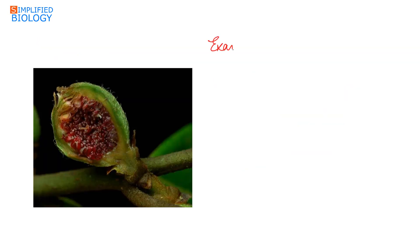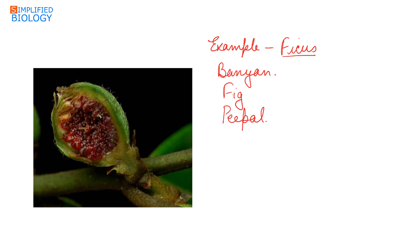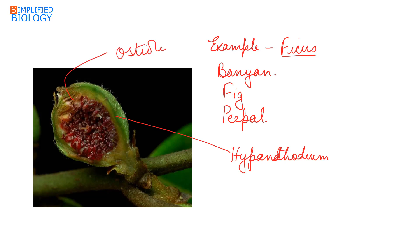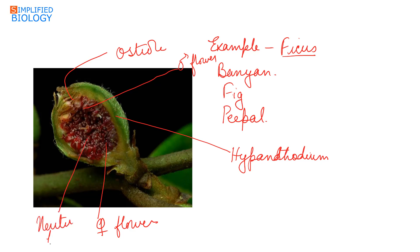An example of hypanthodium inflorescence is the genus Ficus — banyan tree, fig, and peepul. In the diagram, the hypanthodium inflorescence is shown with an opening called the ostiole; the lower ones are the female flowers, the upper ones are the male flowers, and in between the two are the neuter flowers. Ficus fig is also known as anjeer.